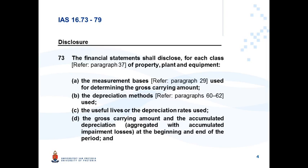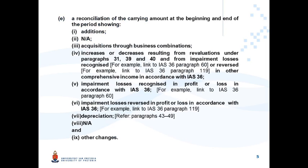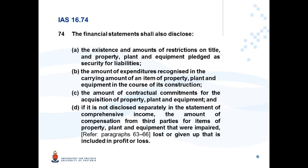Paragraph 73 highlights the accounting policy requirements as well as the detailed information that has to be included in the Property, Plant and Equipment note, where your opening carrying amount is reconciled to your closing carrying amount, indicating the following detailed line items. Paragraph 74 addresses some sundry disclosure requirements.